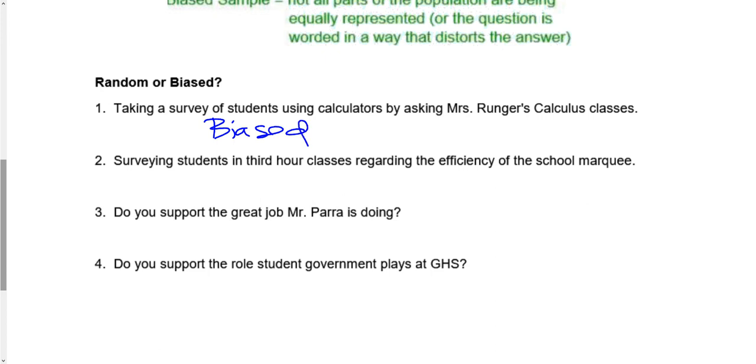Okay, next. Surveying students in third-hour classes regarding the efficiency of the school marquee. Is that biased or is that random? Yeah, it's random. Who's in the third hour? Anybody. Anybody could be in the third hour. Boy, girl, freshman through senior. Everyone. Everyone's in the third hour. So that's random.